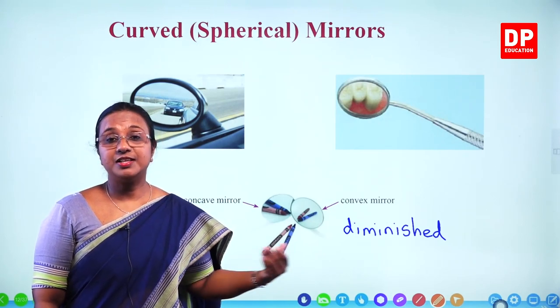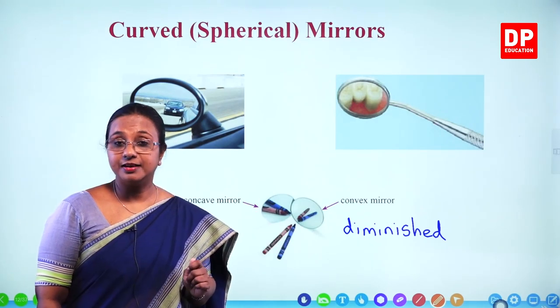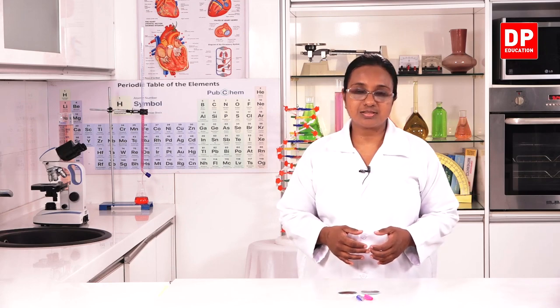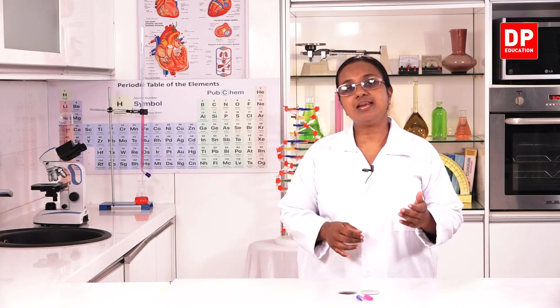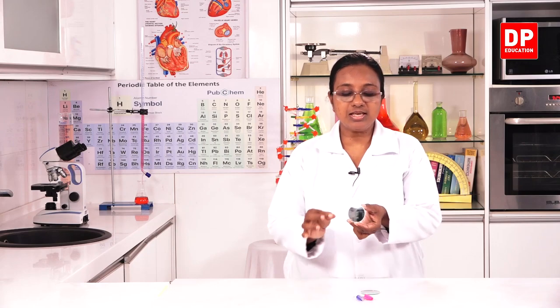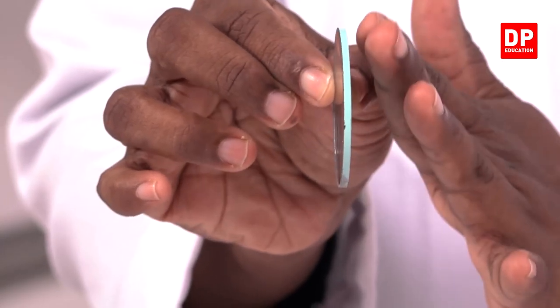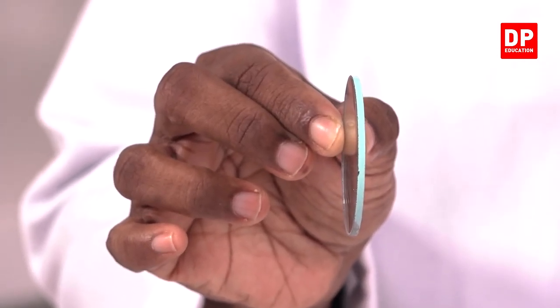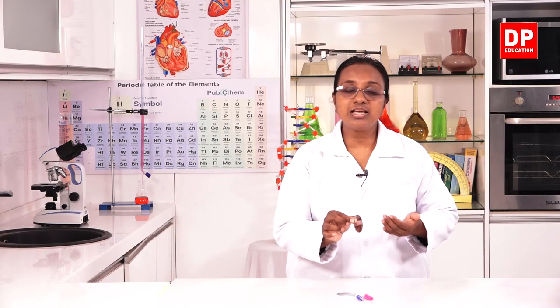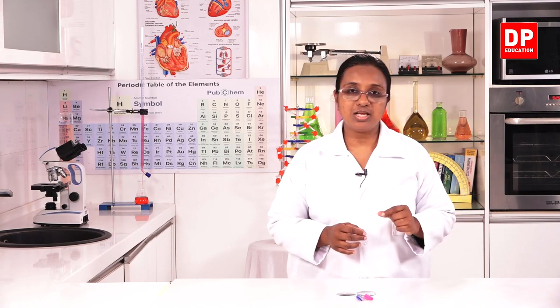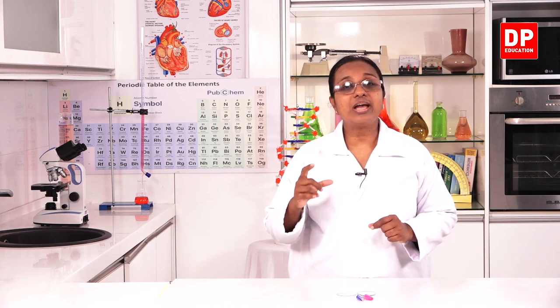Now we are going to observe the two types of curved mirrors. If I take this mirror, you can see it is curved outwards — that means it is a convex mirror. And if we take the other one, this is curved inwards, so it is a concave mirror. Through one mirror you will see a smaller diminished image, and through the other you will observe a larger or enlarged image.